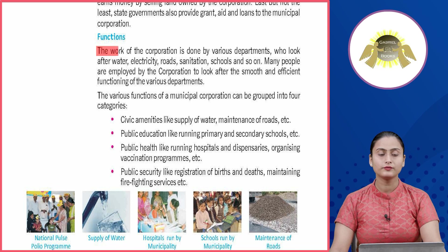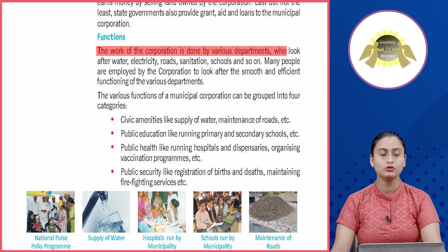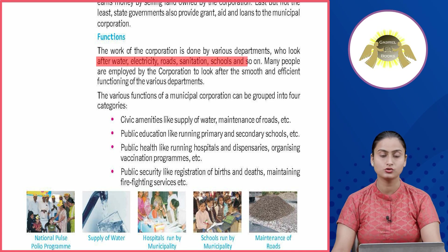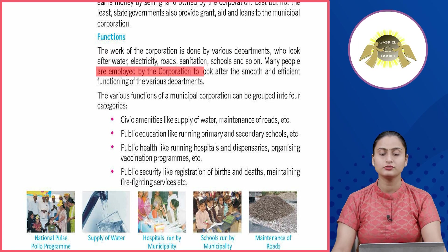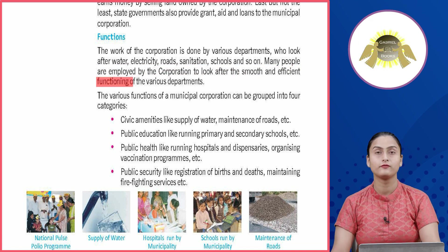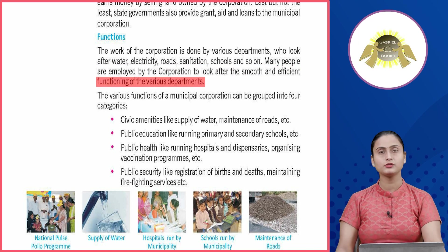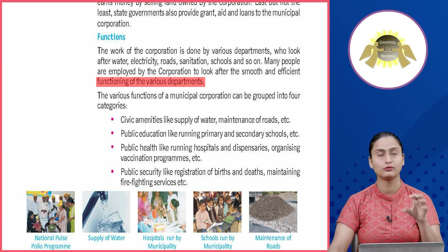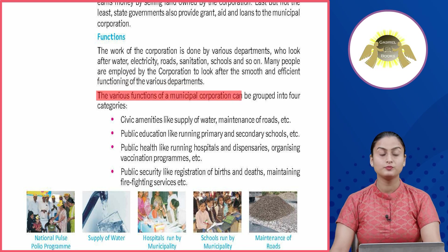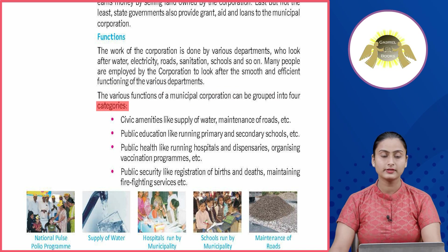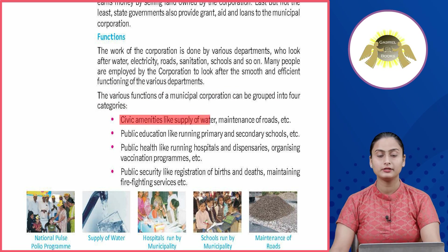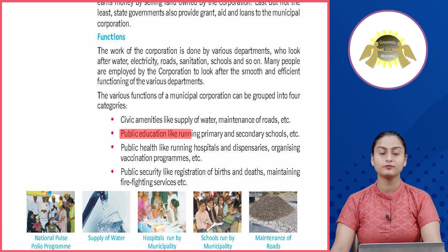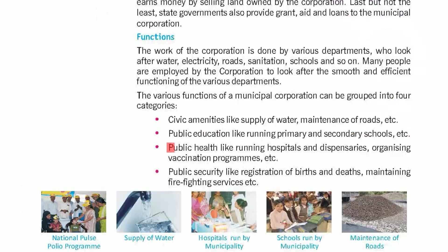The work of the corporation is done by various departments that look after water, electricity, roads, sanitation, schools, and so on. Many people are employed by the corporation to ensure the smooth and efficient functioning of the various departments. The various functions of a municipal corporation can be grouped into four categories: civic amenities like supply of water and maintenance of roads, and public education like running primary and secondary schools.